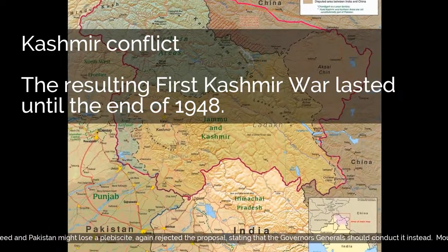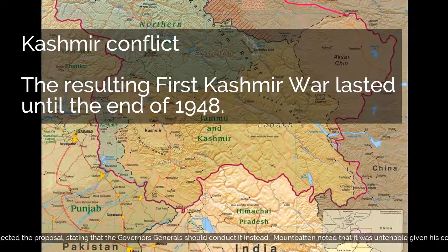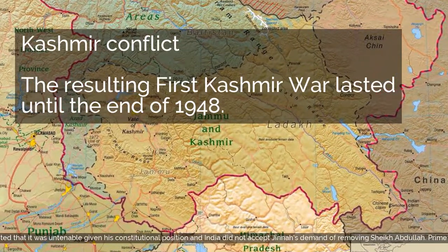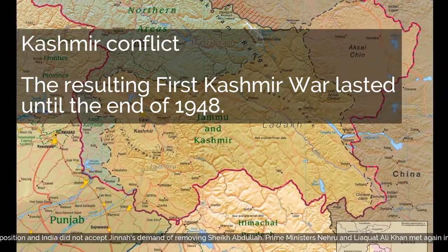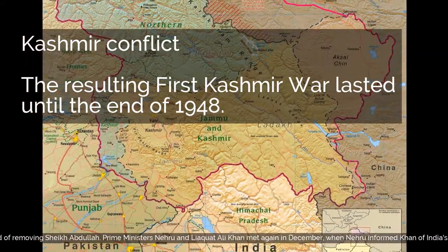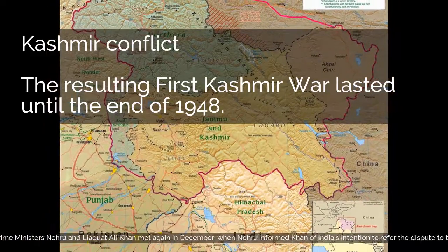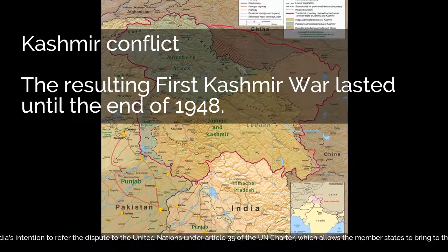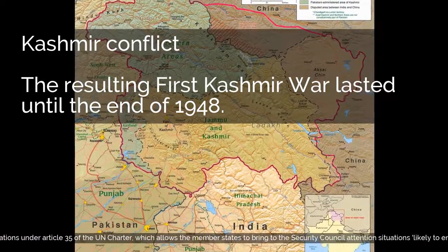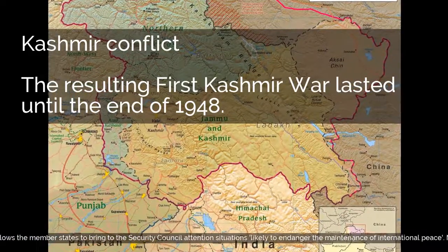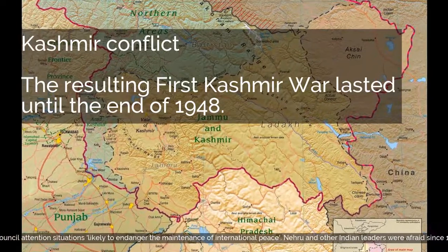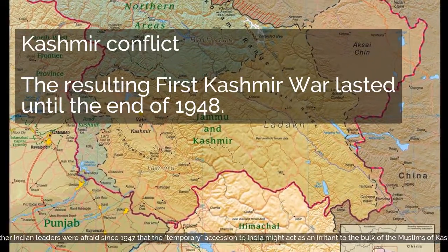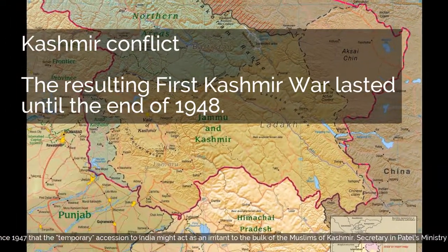Prime Ministers Nehru and Liaquat Ali Khan met again in December, when Nehru informed Khan of India's intention to refer the dispute to the United Nations under Article 35 of the UN Charter, which allows member states to bring to the Security Council attention situations likely to endanger the maintenance of international peace. Nehru and other Indian leaders feared since 1947 that the temporary accession to India might act as an irritant to the bulk of the Muslims of Kashmir. VP Menon, Secretary in Patel's Ministry of States, admitted in an interview in 1964 that India had been absolutely dishonest on the issue of plebiscite. A.G. Noorani blames many Indian and Pakistani leaders for the misery of Kashmiri people but says that Nehru was the main culprit.